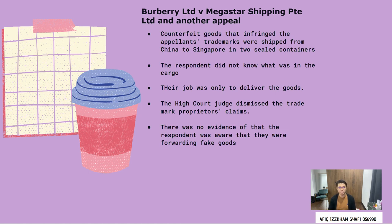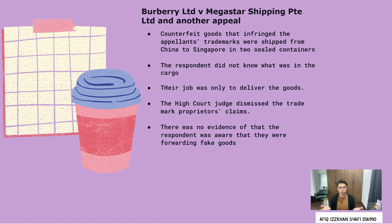In Singapore, referring to Burberry Ltd against Megastar Shipping PTE Ltd and another appeal, the appellants were trademark proprietors of luxury brands Burberry and Louis Vuitton. Counterfeit goods that infringed the appellants' trademarks were shipped from China to Singapore in two sealed containers, to be transshipped to Indonesia, but were seized by Singapore customs before any shipment could occur. There was no evidence to suggest that the freight forwarders were aware they were forwarding fake goods — their job was only to receive cargo from China and forward it to Indonesia. Therefore, there was no evidence for a quia timet injunction; since the goods had already been disposed of, there was no imminent danger or apprehended damage to justify granting an injunction. The High Court Judge of Singapore dismissed the trademark proprietors' claim since a mere intention to export was insufficient.